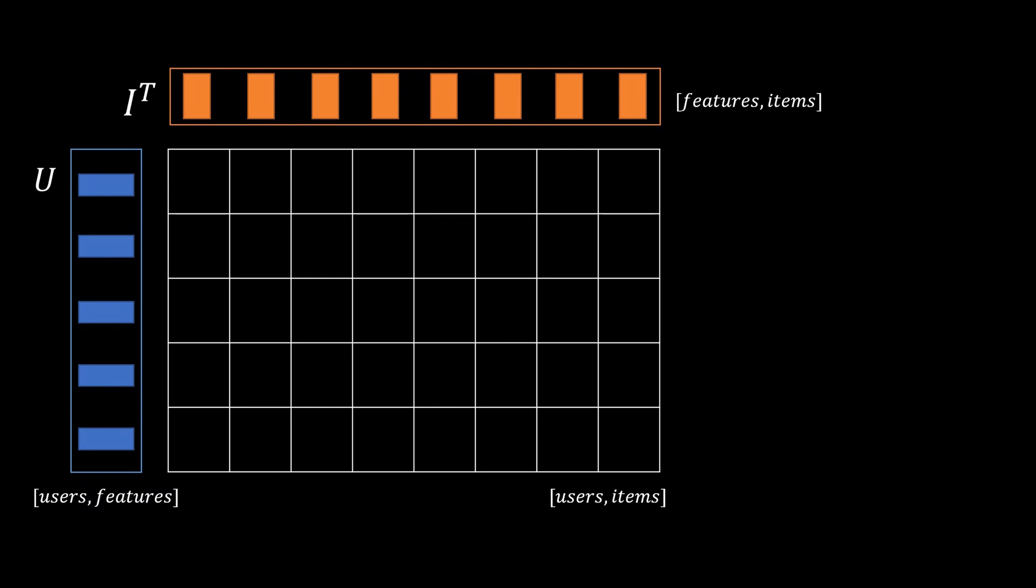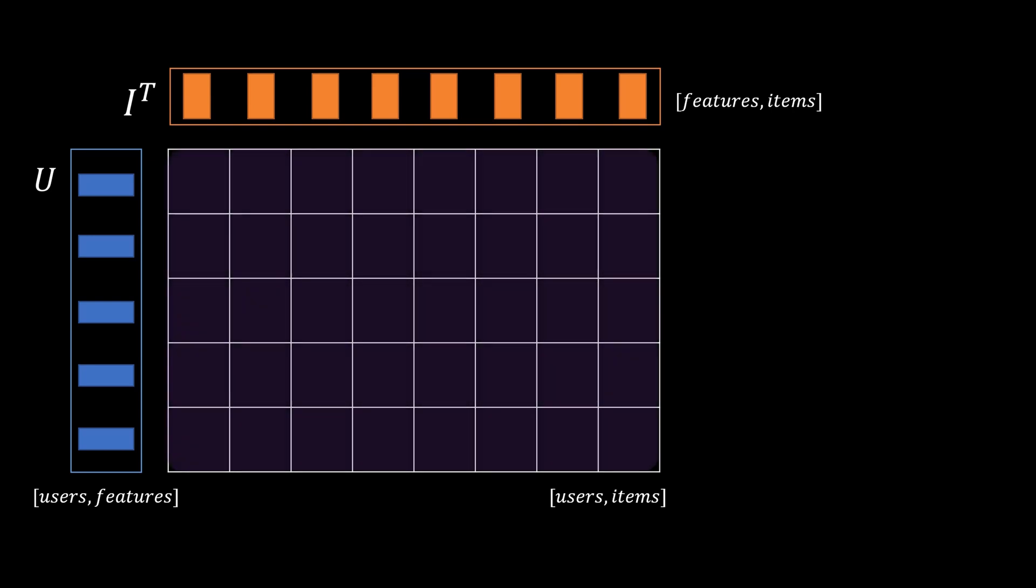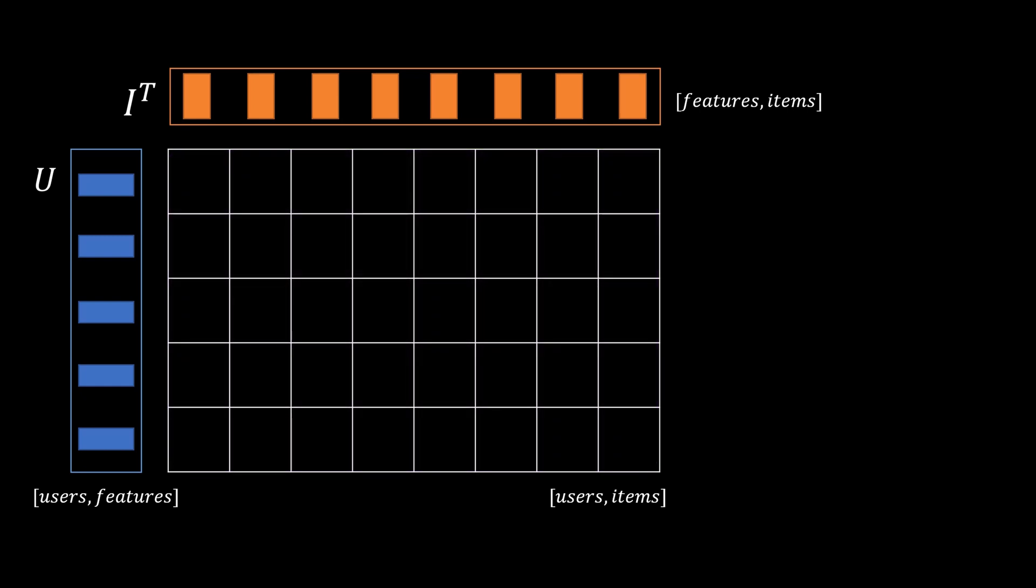In order to map the latent codes into the same embedding space a dot product between the user vectors and the item vectors is used as similarity measure. For this the item matrix is transposed so that the shapes match. This dot product generates the predicted matrix on which high values indicate that a user item combination matches and low values that we should better not recommend this item.